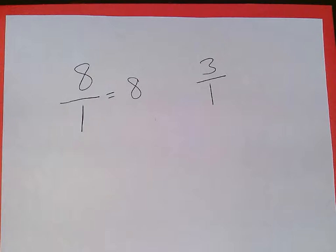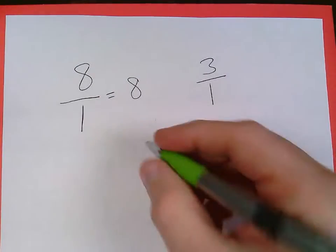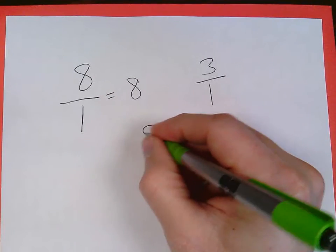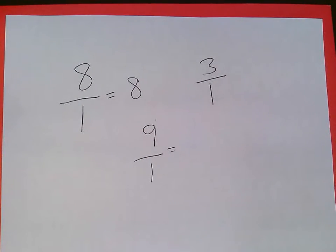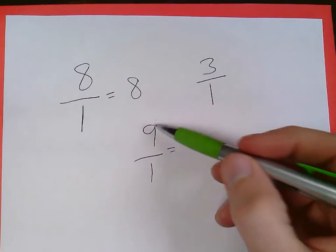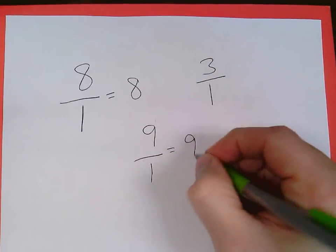So 3 over 1 equals 3. If I have a fraction and I want to turn that fraction into a whole number, just remember, fraction bar means divided by. 9 divided by 1 equals 9.